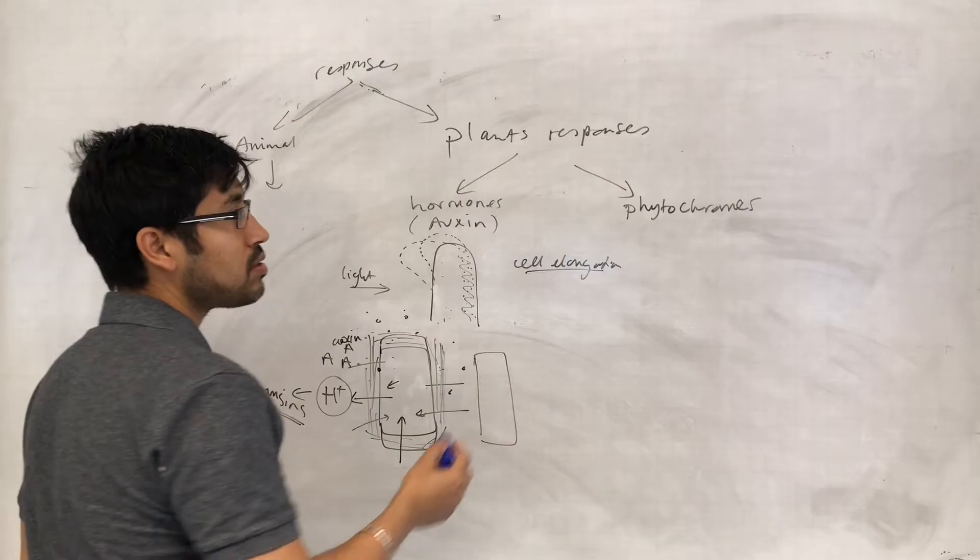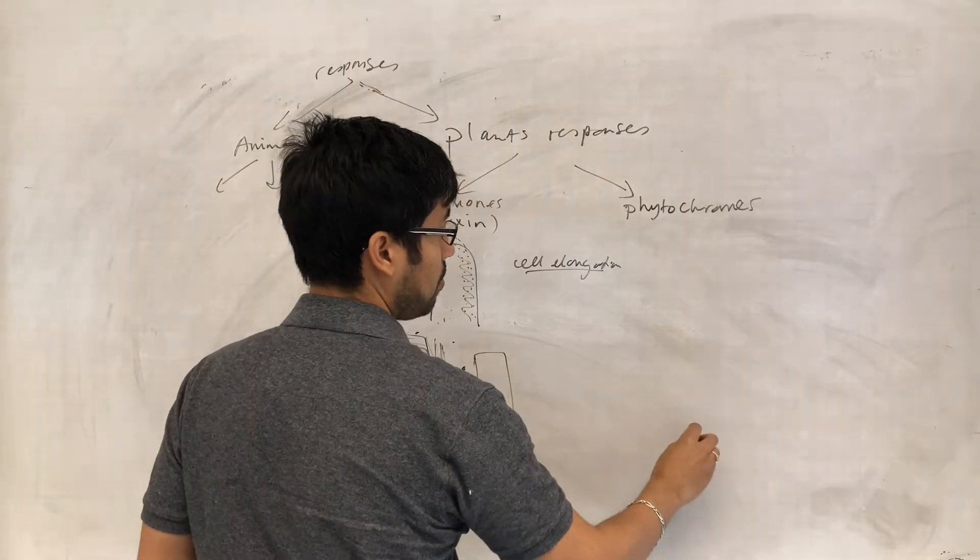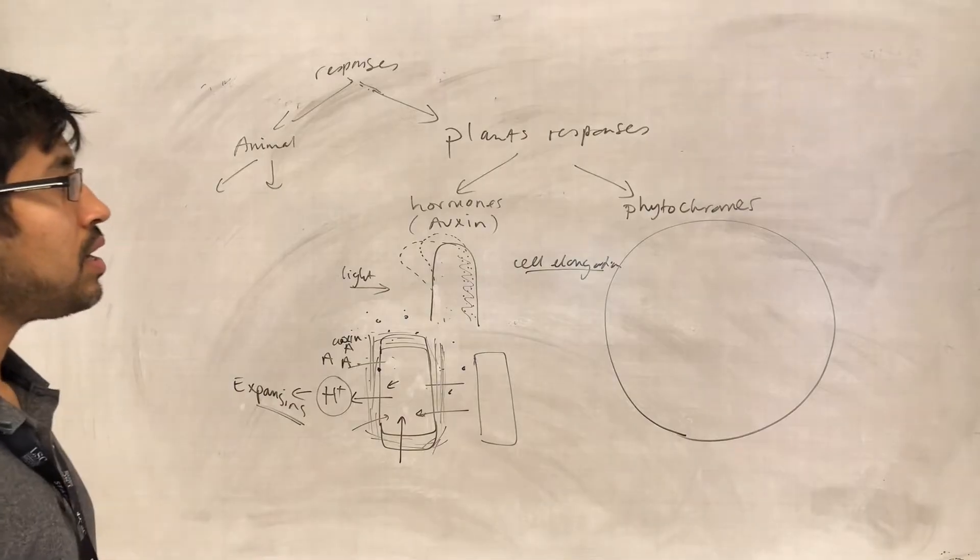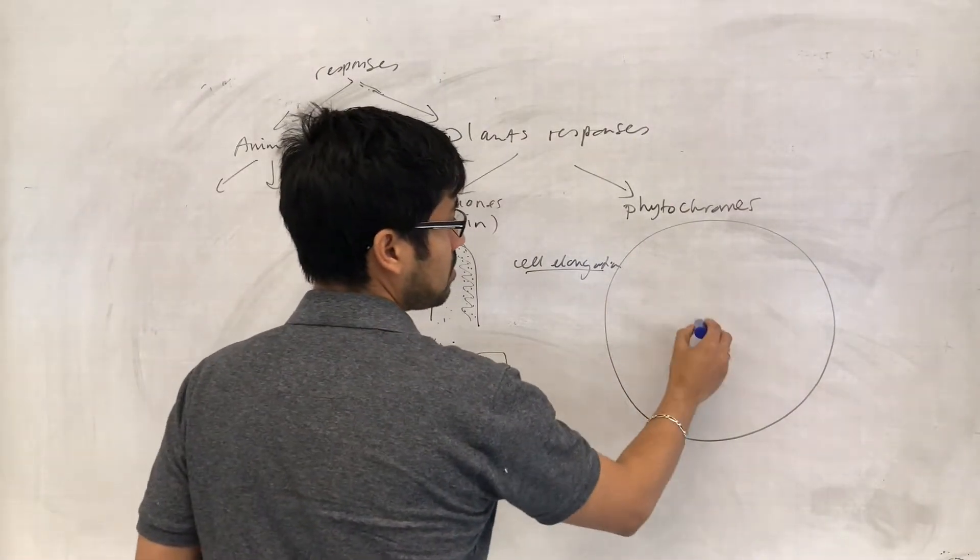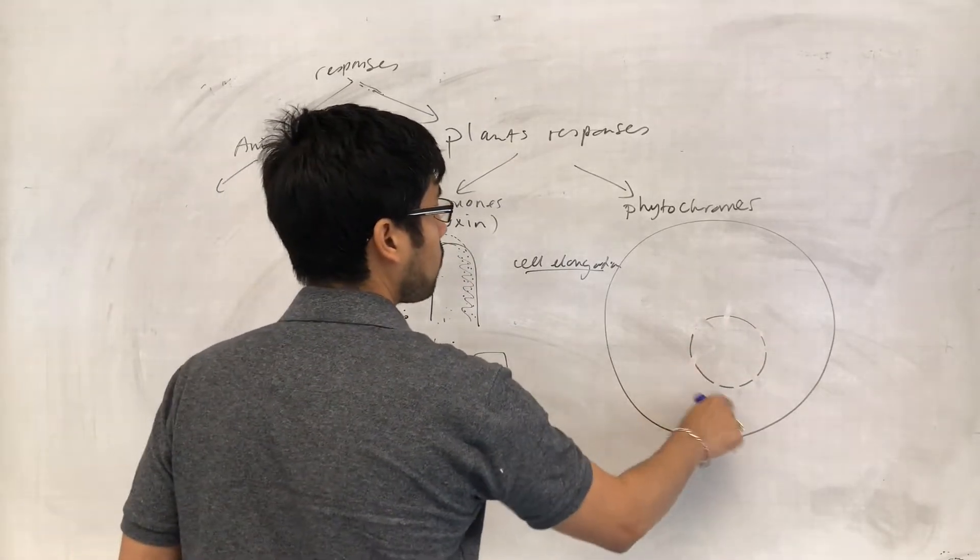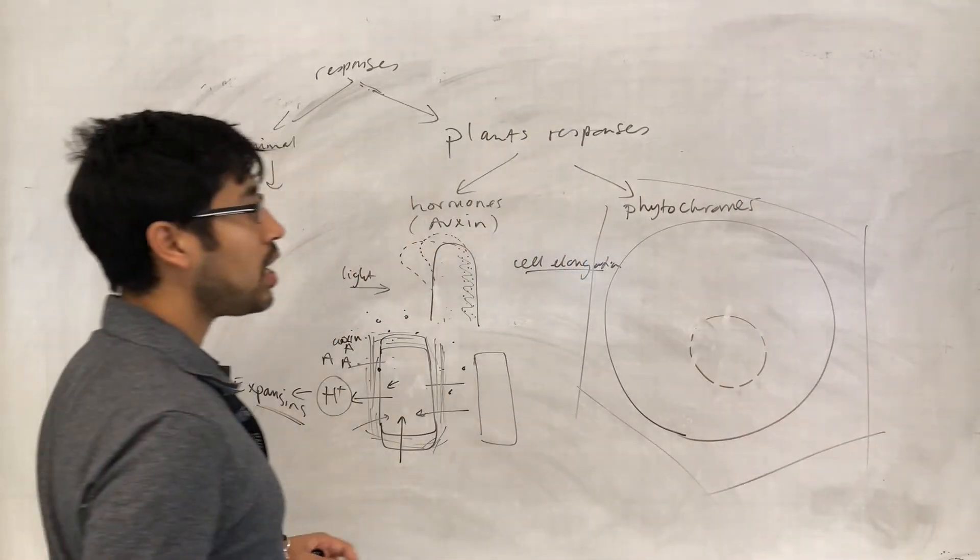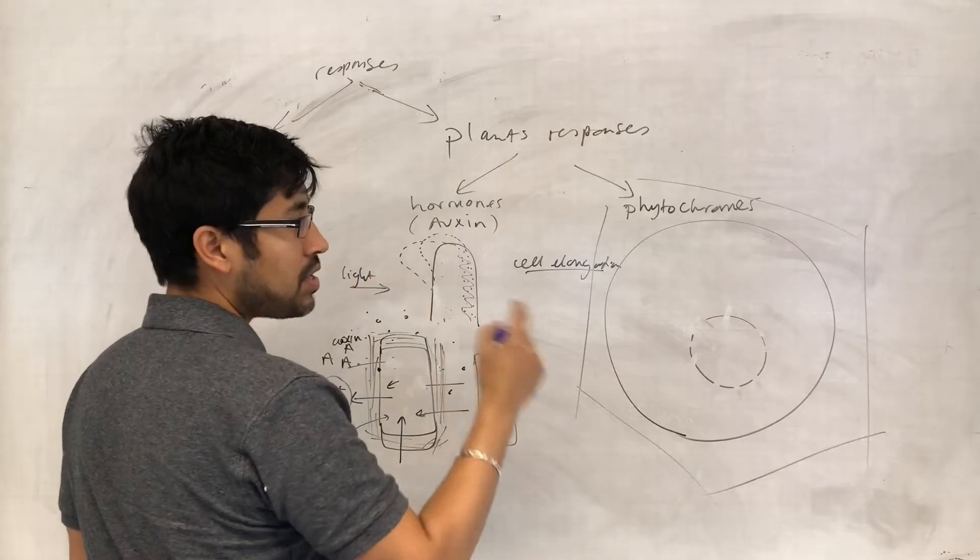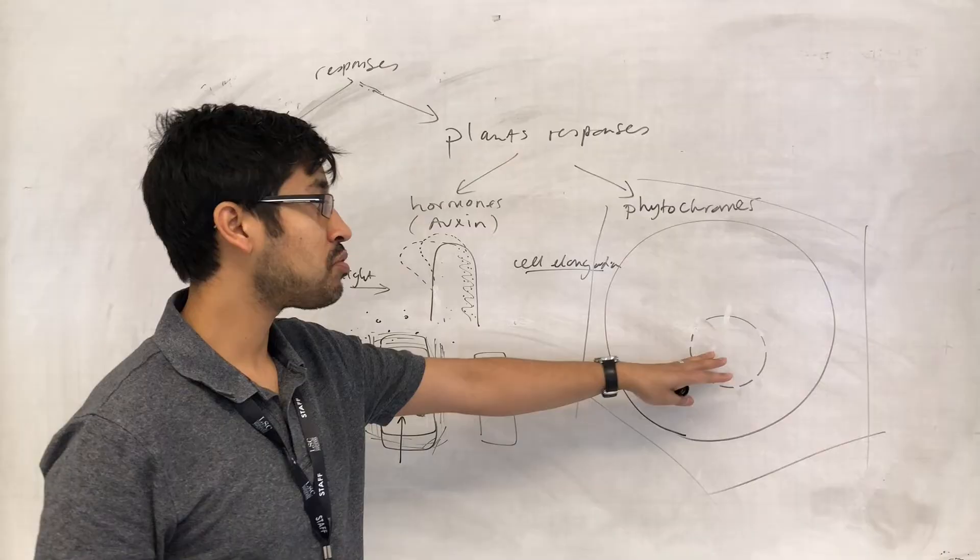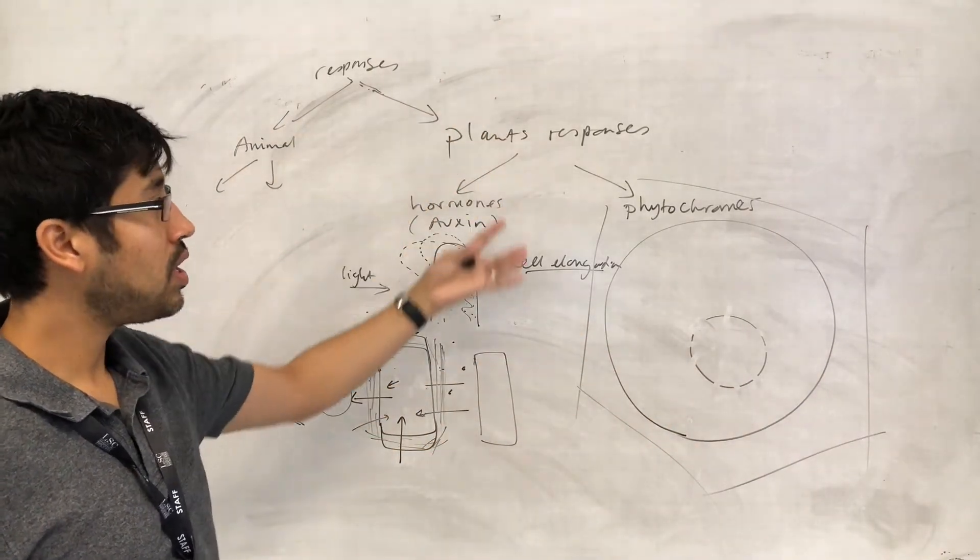Let's move over to phytochromes now. Phytochromes are intracellular proteins. So we've got a cell here, and the nucleus also. A plant cell. And the idea is that as well as auxins, phytochromes allow gene expression changes to happen in the plant cell in response to external conditions.